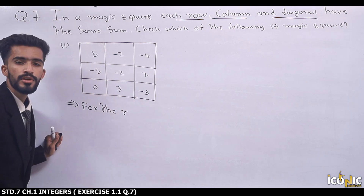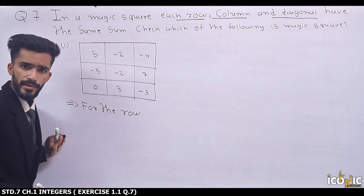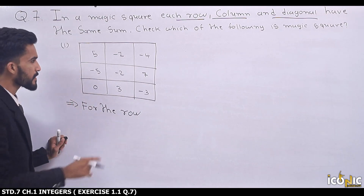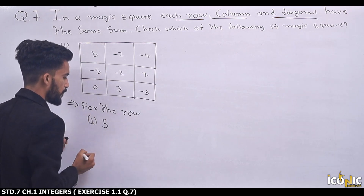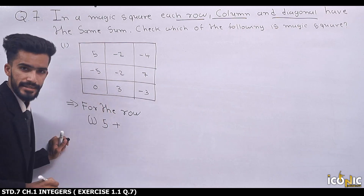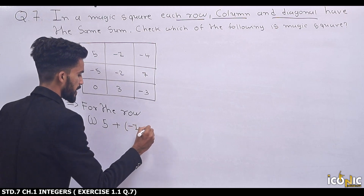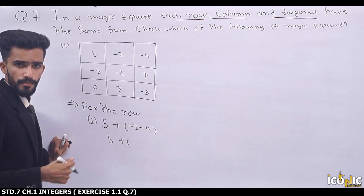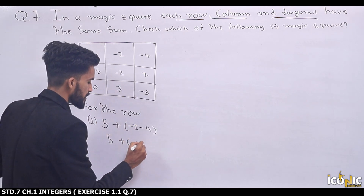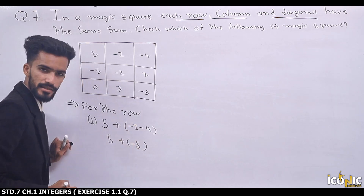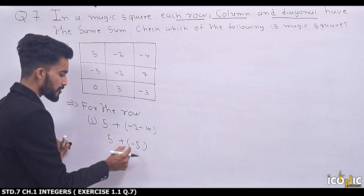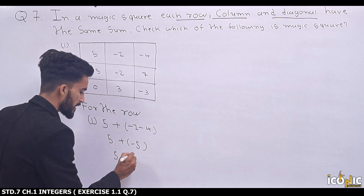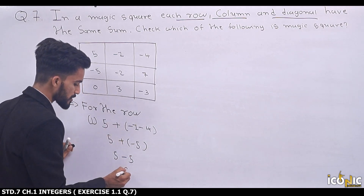For the first row: 5, -1, -4. We put minus values together and plus values together. So we have 5 plus minus 1 minus 4. Same sign addition: minus 1 minus 4, same sign, addition gives 5. Sign of bigger number is minus, so 5 minus 5. Opening the bracket: 5 minus 5 equals zero. So the first row answer is zero.